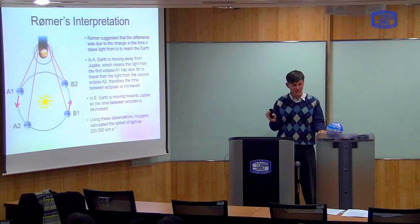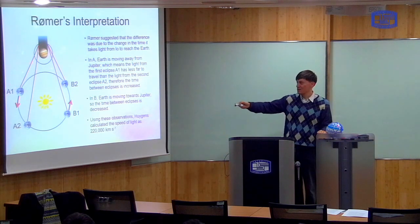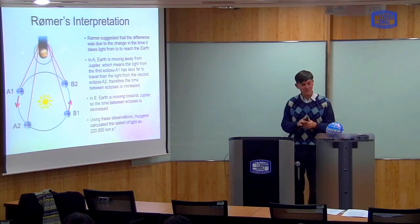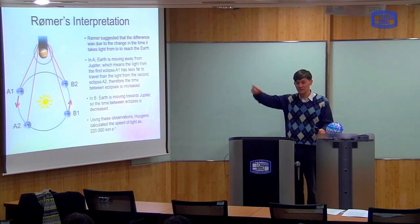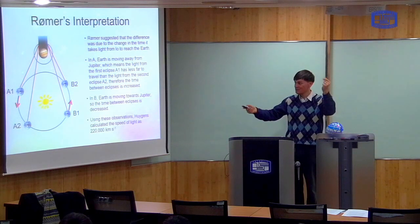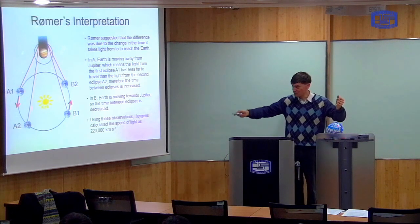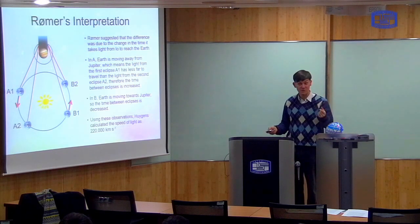Now, if the speed of light is finite, that means that the time it takes light to go from here to A1 is shorter than the time it takes light to go from here to A2. Now what that means is that the observed time between eclipses will be longer. Right? Because the eclipse happens regularly. Okay? But the first time it happens, it only takes a short amount of time for the light to reach us. But the second time it happens, it takes more time. So the signal looks delayed. Right? It looks slower than it actually is.